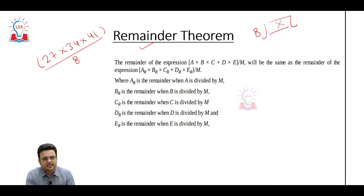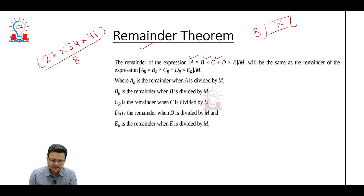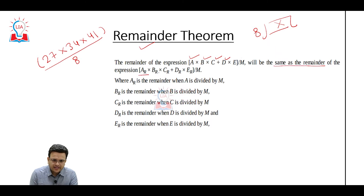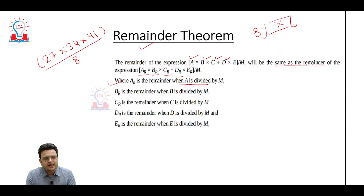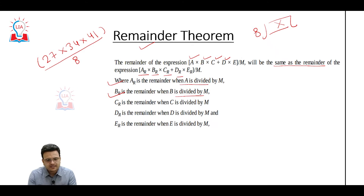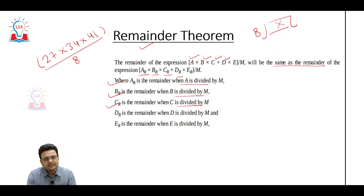Remainder theorem says that if we have a number (A × B × C + D × E) divided by M, the remainder will be the same as (A_R × B_R × C_R + D_R × E_R) divided by M. Here A_R is the remainder of A divided by M, B_R is the remainder of B divided by M, C_R is the remainder of C divided by M, D_R is the remainder of D divided by M, and so on.